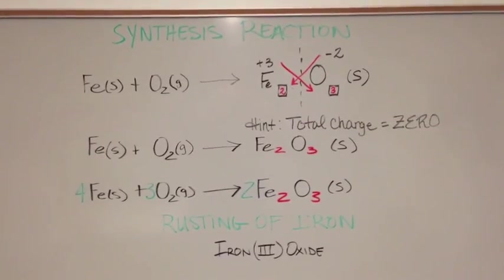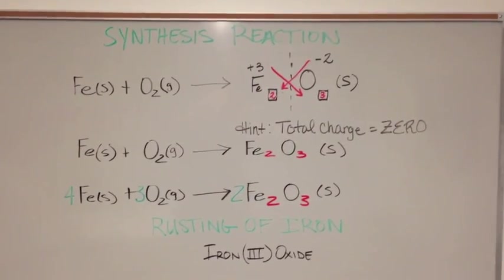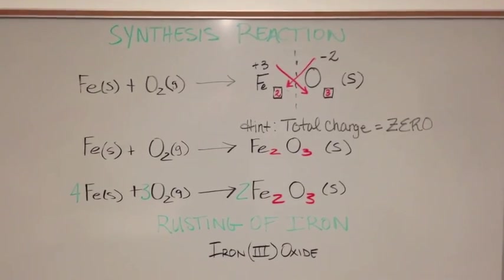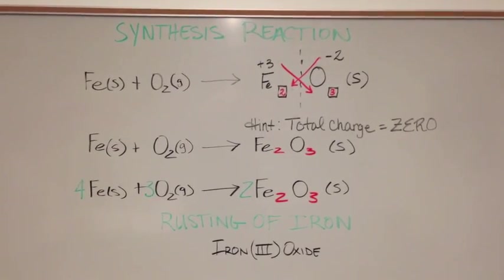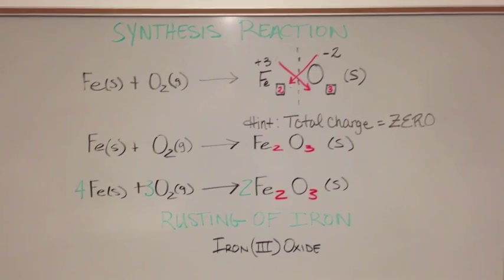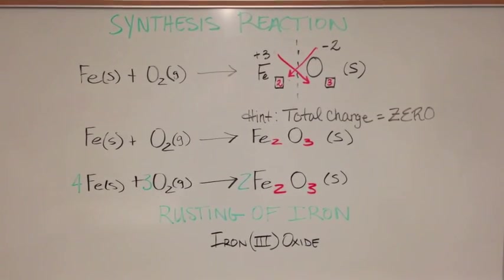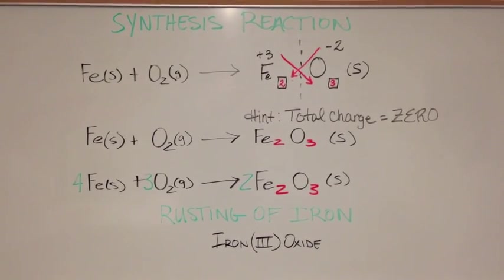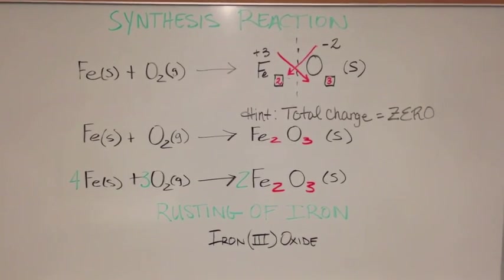The second step: now that we have the products and a balanced compound on the right, the equation is not yet balanced though. So what we're going to do is put a 2 in front of the Fe₂O₃ on the product side, which gives us 4 irons and 6 oxygens.